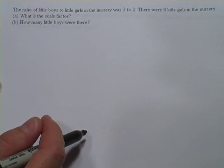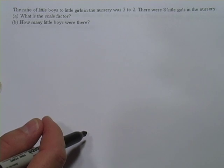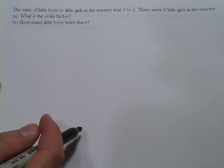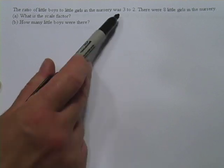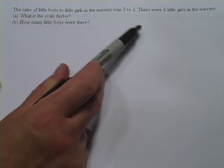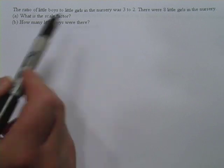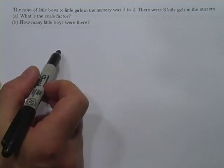Here's a problem that uses ratios and scale factors, and both of these things are really important to learn how to do right, so let's look at this. The ratio of little boys to little girls in the nursery was 3 to 2. There were 8 little girls in the nursery. What is the scale factor? How many little boys were there?